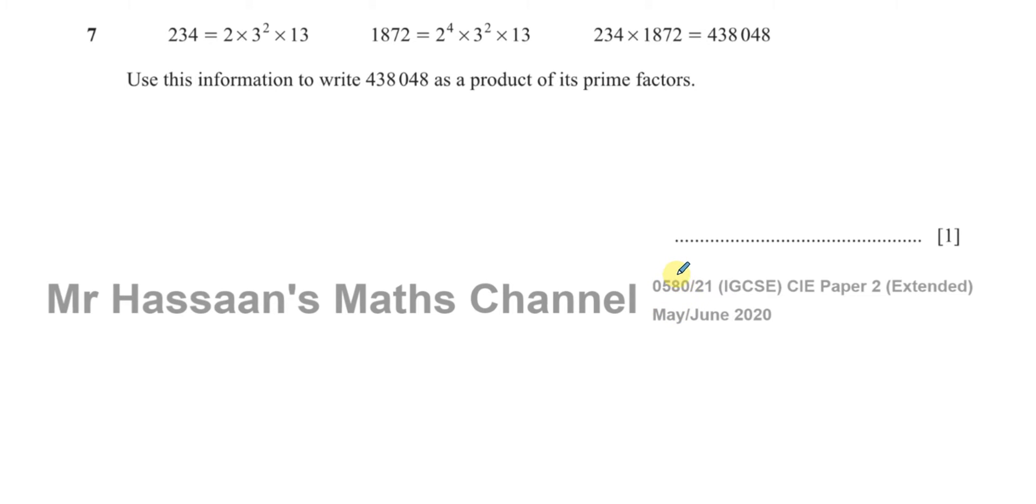This question is about these numbers which have been expressed as a product of their prime factors, and it tells us to use the information given to write 438,048 as a product of its prime factors. We can see that 438,048 is equal to 234 multiplied by 1,872.